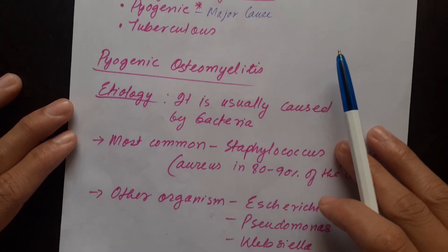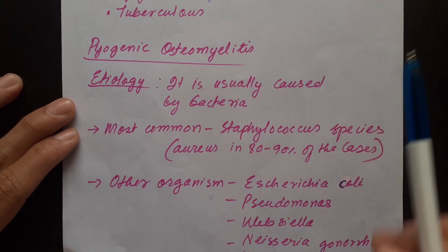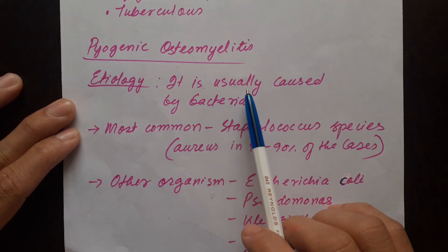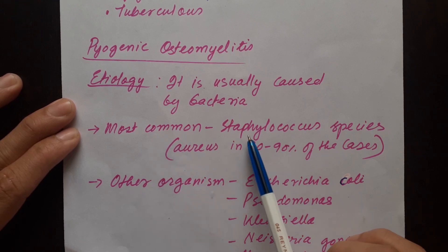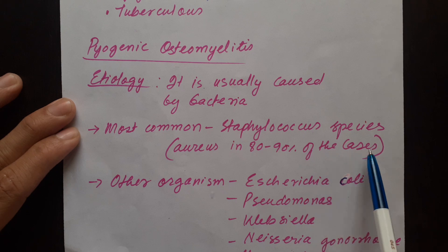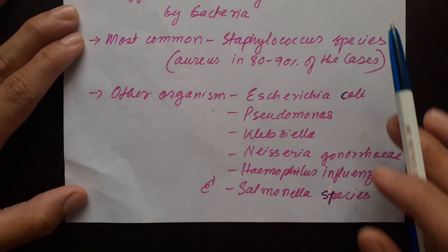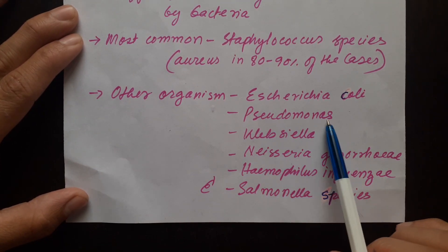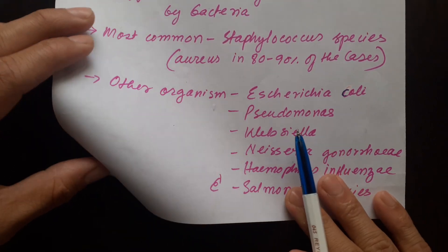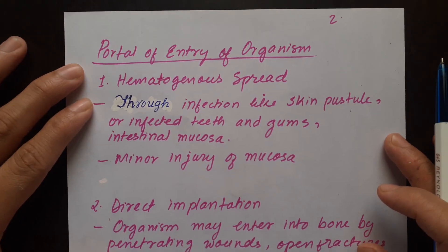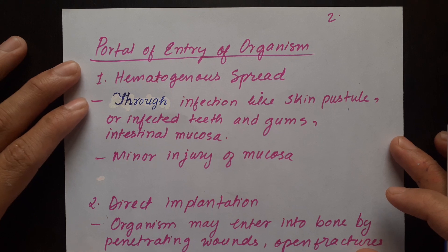Now let's see pyogenic osteomyelitis in detail. Etiology: it is usually caused by bacteria, most common being Staphylococcus species — that is aureus — in about 80 to 90 percent of cases. Other organisms like E. coli, Pseudomonas, Klebsiella, Neisseria gonorrhoeae, Haemophilus influenzae, and Salmonella species also cause pyogenic osteomyelitis.